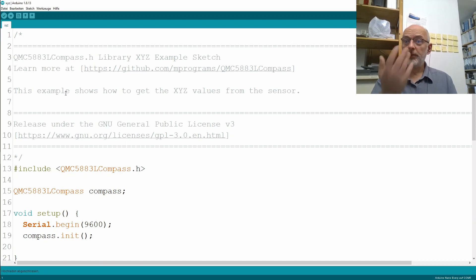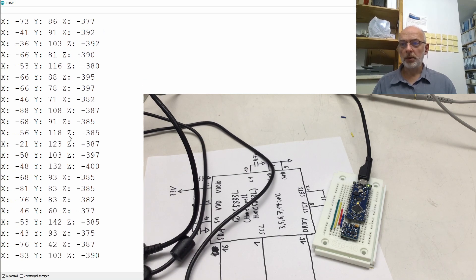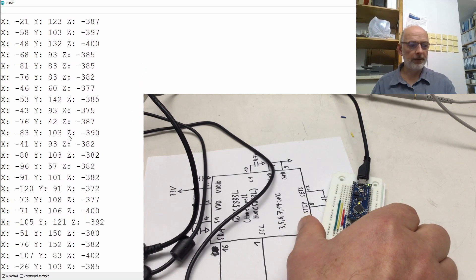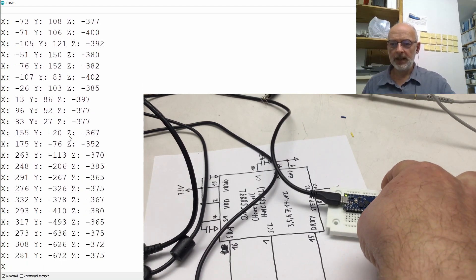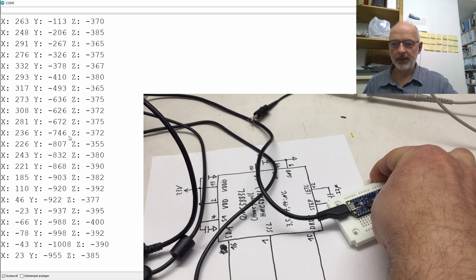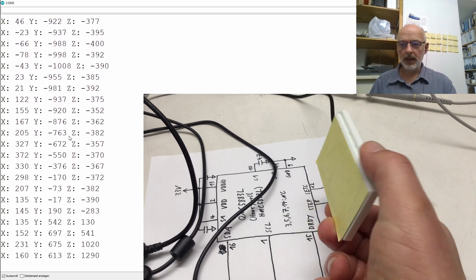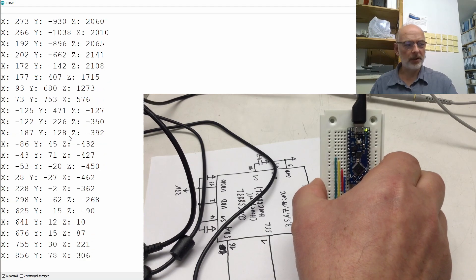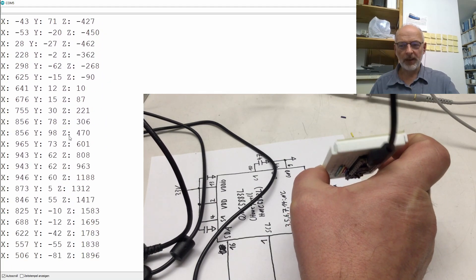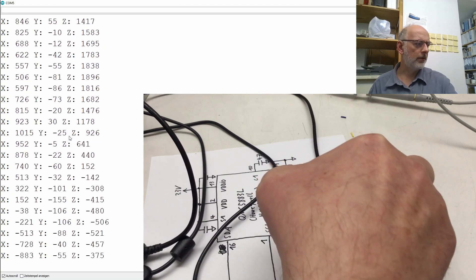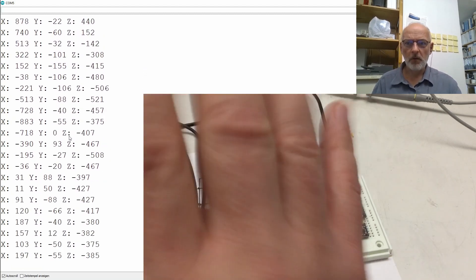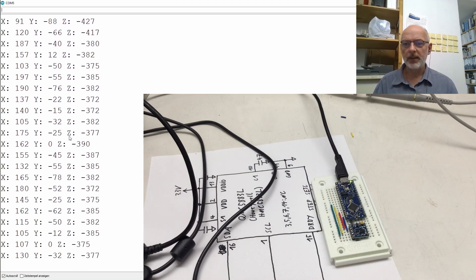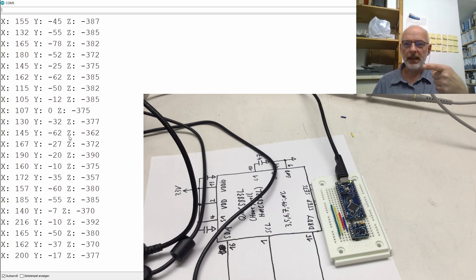We start with the example from the library that simply outputs the raw XYZ values from the sensor. Here you see the output on the Arduino serial monitor and if I turn now my sensor, you see the values on all three axes changing and it seems to work like a charm. Of course, you need trigonometry to make sense of these values and you also are supposed to calibrate that thing the first time you use it.